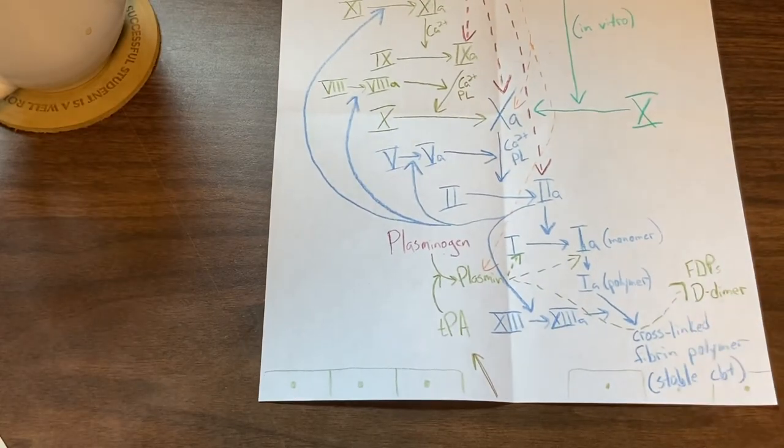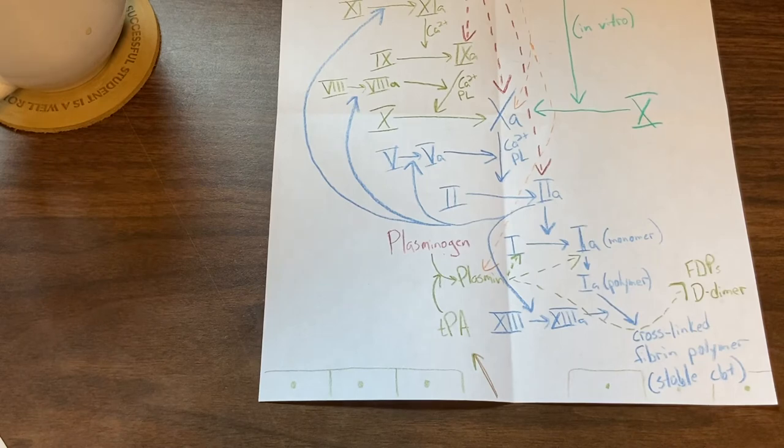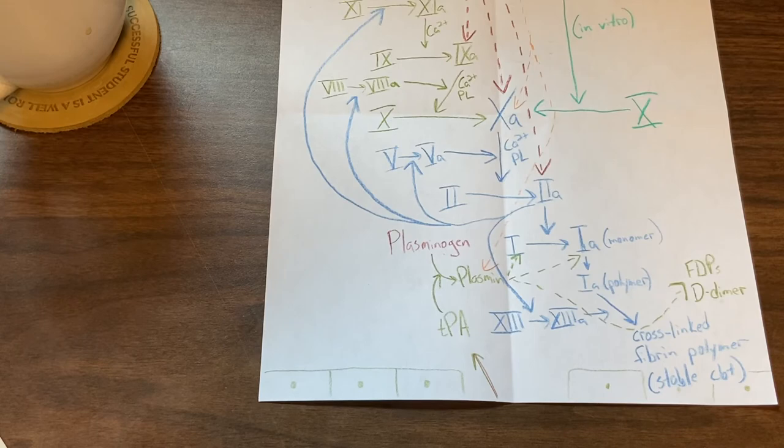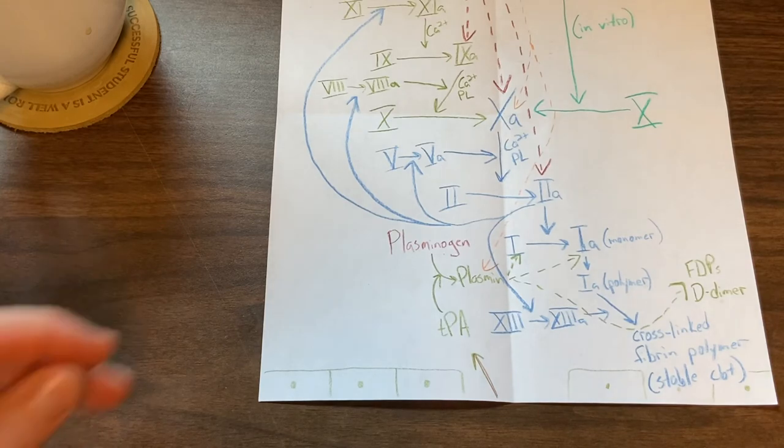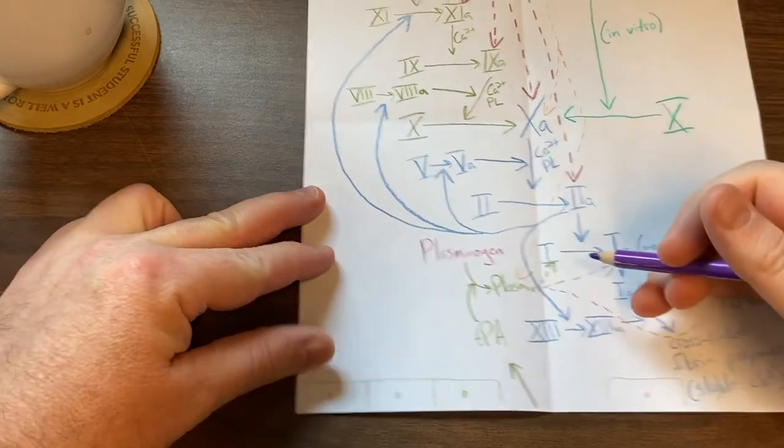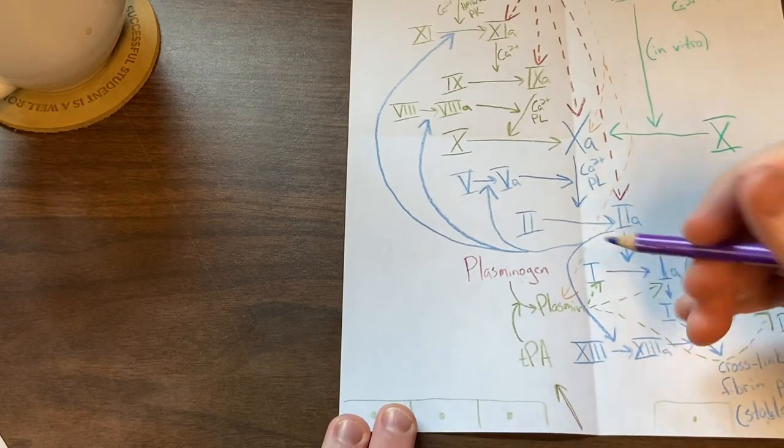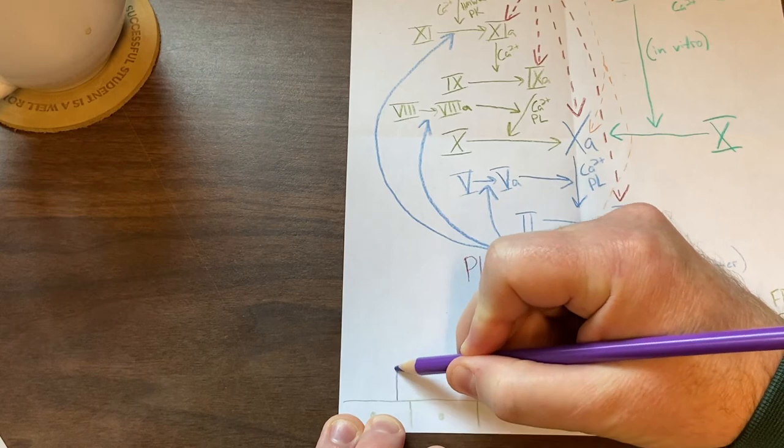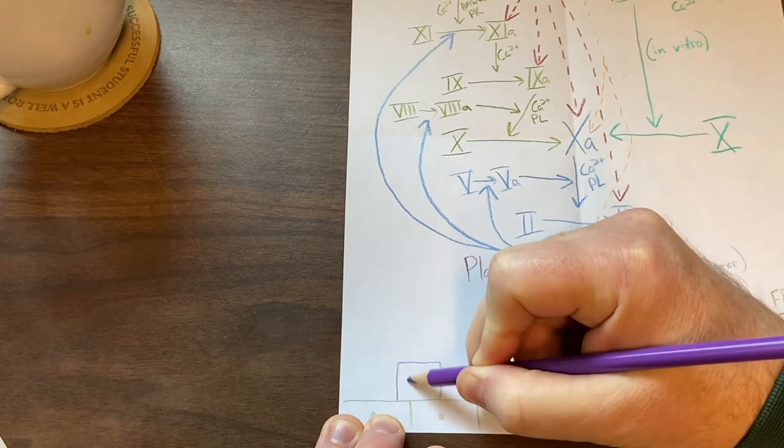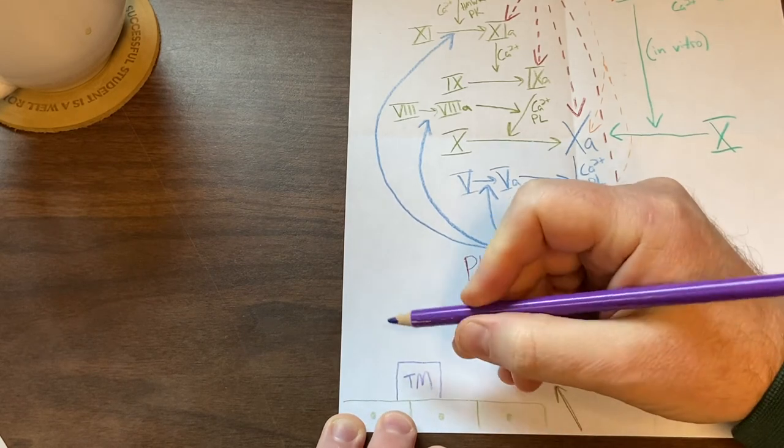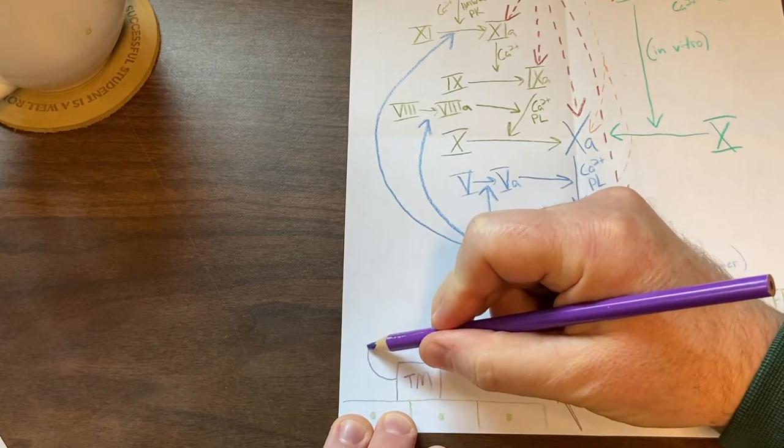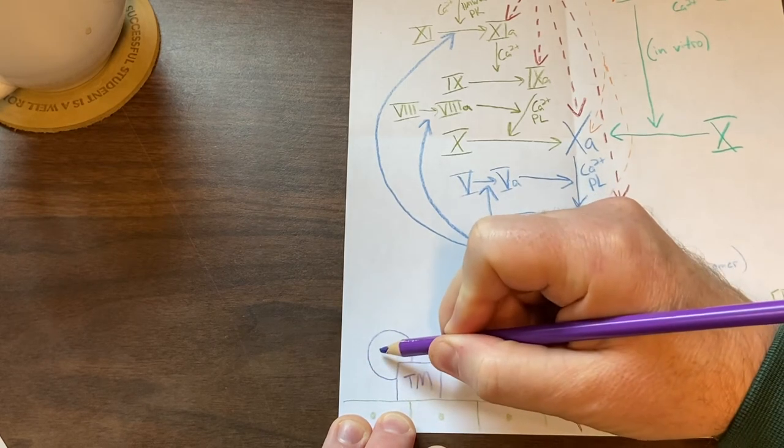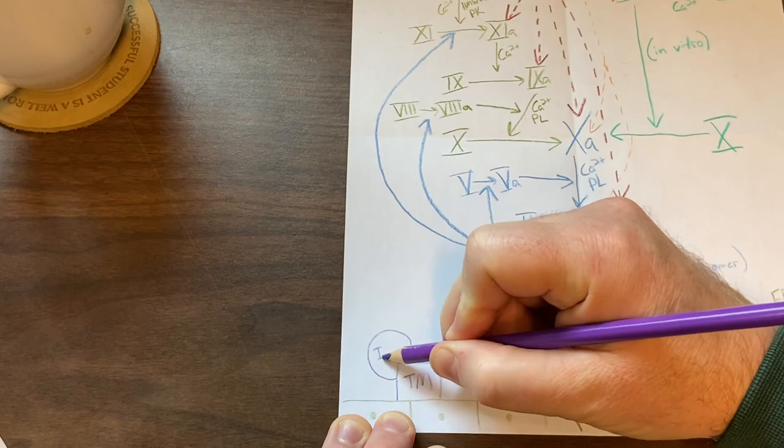Going back to this guy here, I'll go back here. When we draw this I'm gonna use purple. Let's do purple. I'll slide this over just a little bit here. So what we have here is the thrombomodulin, so I'm gonna draw thrombomodulin here.